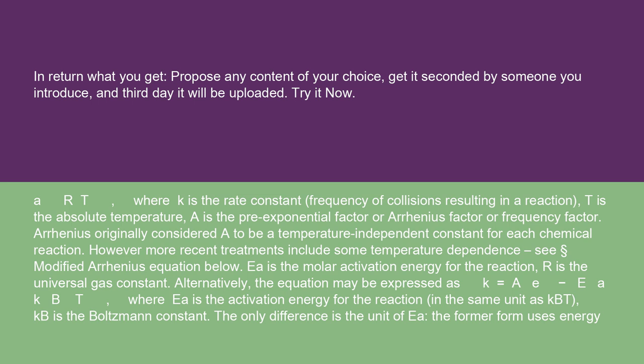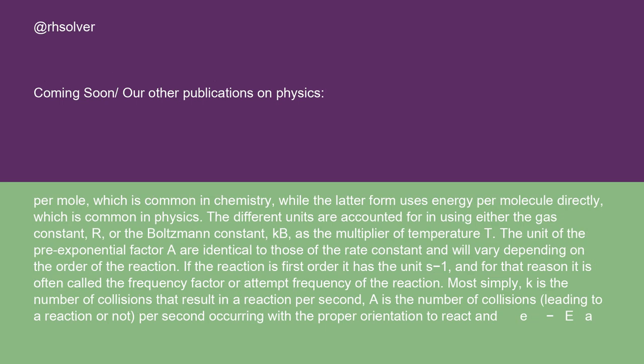Alternatively, the equation may be expressed as K equals Ae^(-Ea/kBT), where Ea is the activation energy for the reaction, in the same unit as kBT. kB is the Boltzmann constant. The only difference is the unit of Ea. The former form uses energy per mole, which is common in chemistry, while the latter form uses energy per molecule directly, which is common in physics.